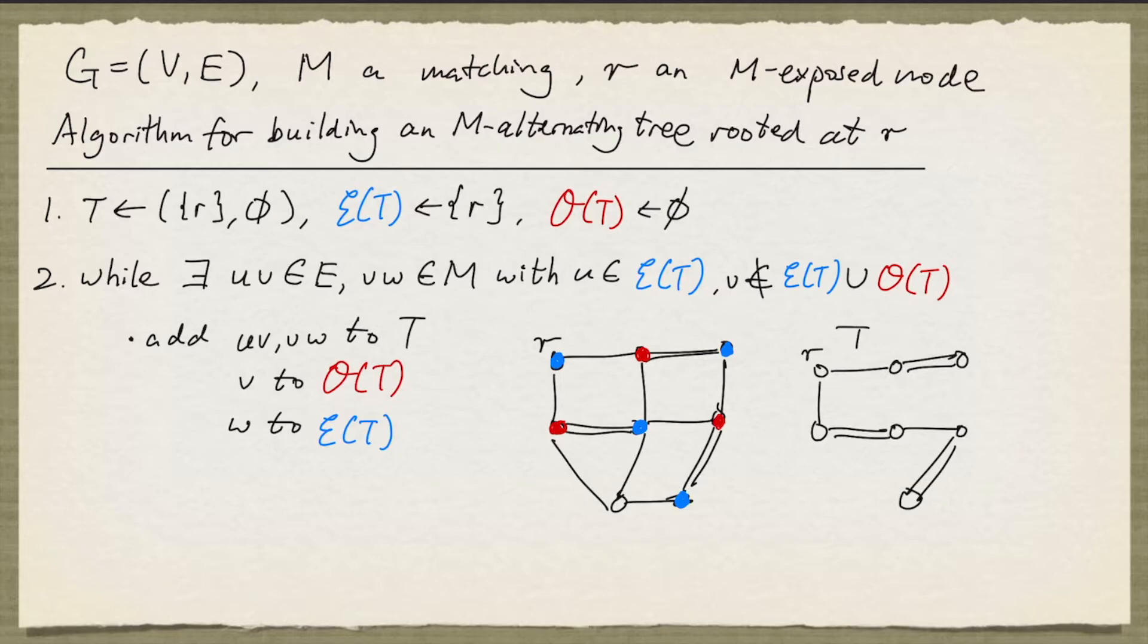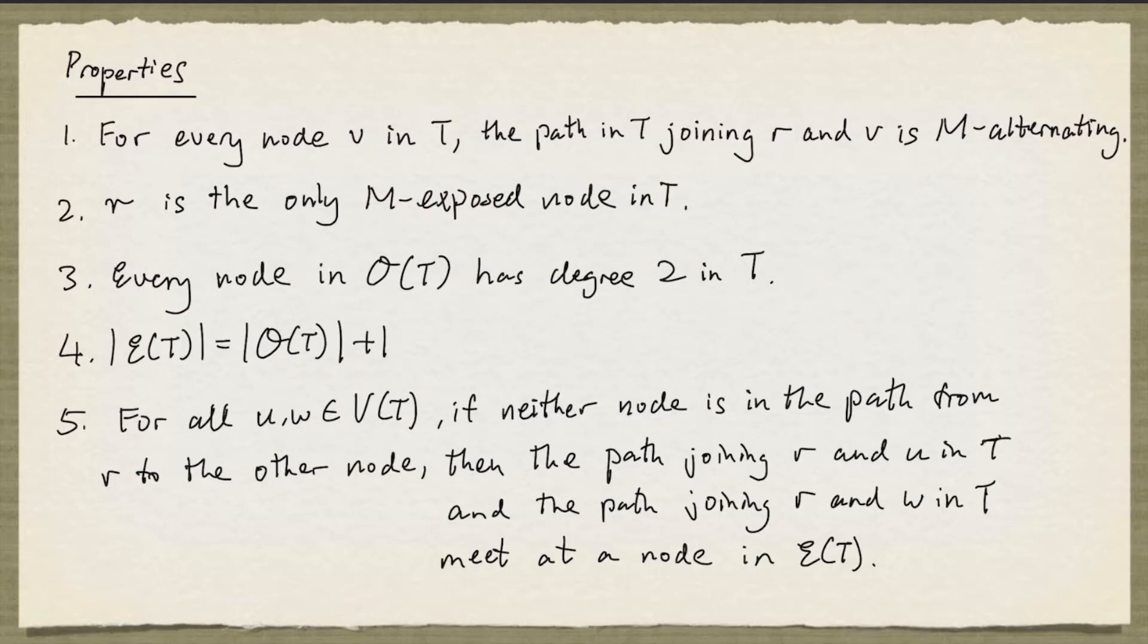And we can also see from the way the edges are added to T, every node in the odd set has degree 2. And so the first four properties here summarize what I've just said.